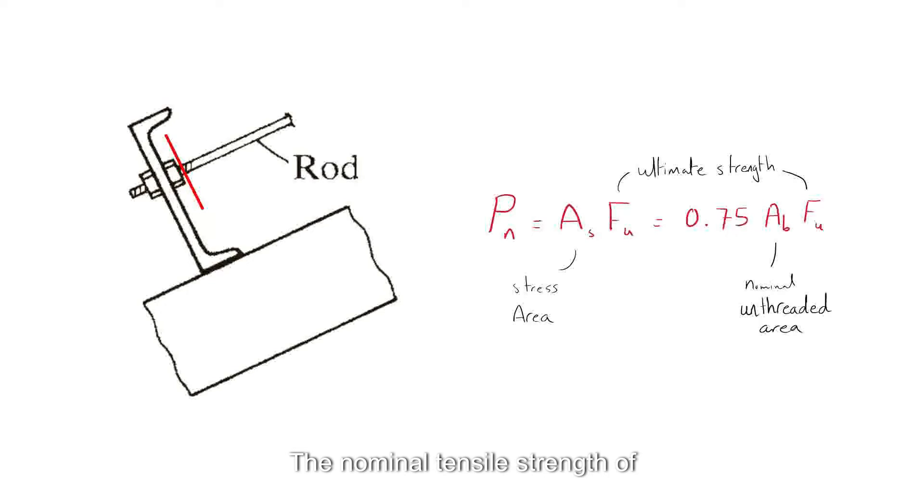The nominal tensile strength of the threaded rod can therefore be written as the tensile strength is equal to the stress area multiplied by the ultimate tensile strength.